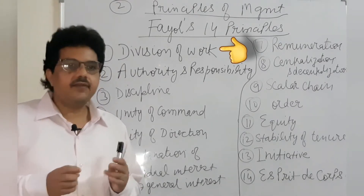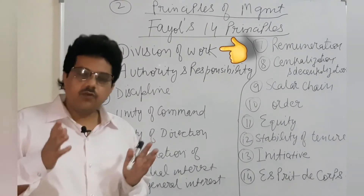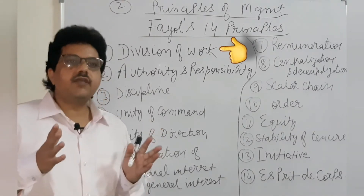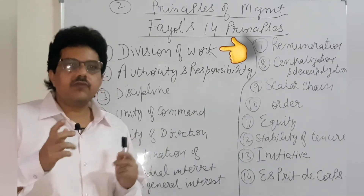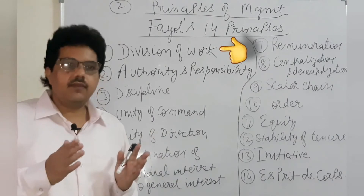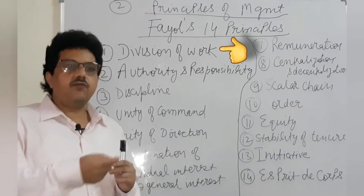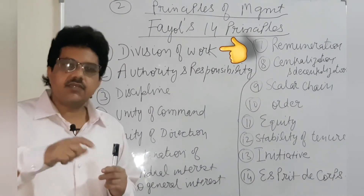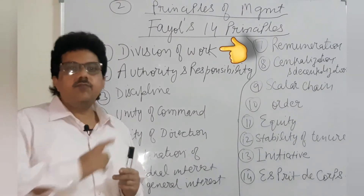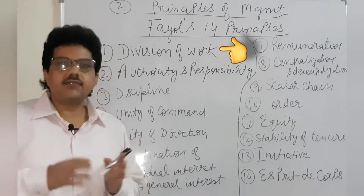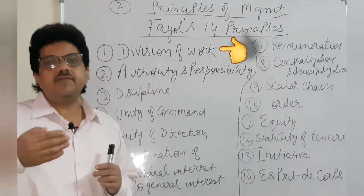I am explaining it in very simple language. Kaam ka batwara ka kya matlab hai — work jo hota hai, woh bahut saare tasks se banta hai. For example, suppose there is an examination — that is one work. In it there are many small tasks: someone does computer work, someone does filing, someone enters data, someone uploads marks. That is all tasks. If you give it to one person alone, they cannot manage it — it has to be allocated, it has to be divided.